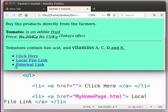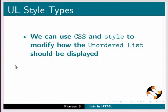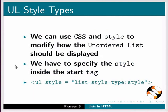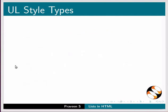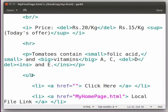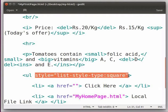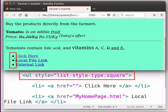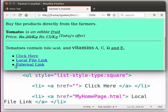I don't want this to be in a rounded bullet point. Instead, I want it in some other shape, say square. We can do this with the help of CSS. We can use CSS and style to modify how the unordered list should be displayed. We have to specify the style inside the start tag. The unordered list styles are: disk, circle, square, and none. Switch to the editor window and try this. Inside the ul start tag, type as shown here. Save the file, switch to the browser and refresh the page. Instead of the rounded bullet points, we see square bullet points. Similarly, we can change the unordered list styles to show other shapes for the bullets.